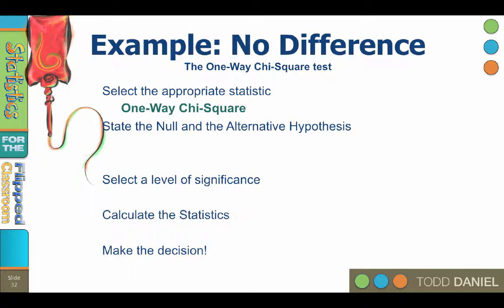Step two, state the null and alternative hypotheses. In this case, the percentages of obtained values are being compared to an assumption that there is no difference from the percentages in the comparison population. The distribution of blood types should be the same in the foreign country as it is in the United States. So the null hypothesis is H-sub-zero: blood type distribution in the foreign country fits the U.S. distribution, or is the same as the distribution in the U.S.